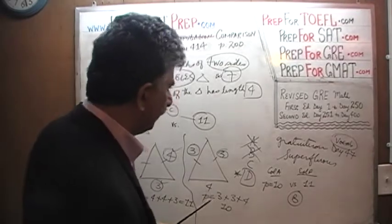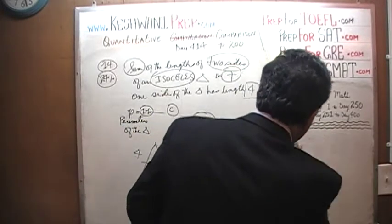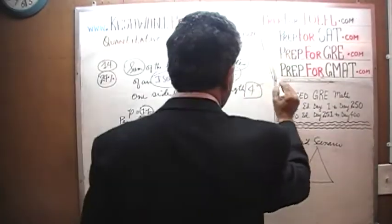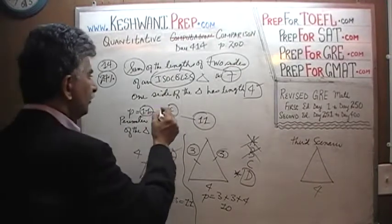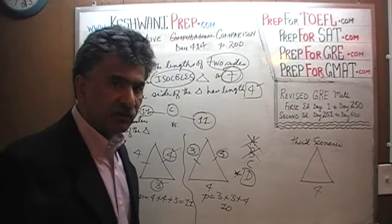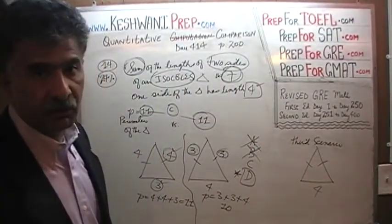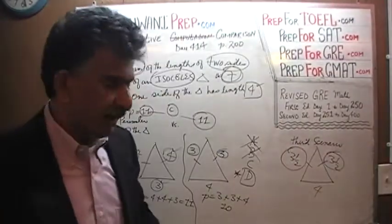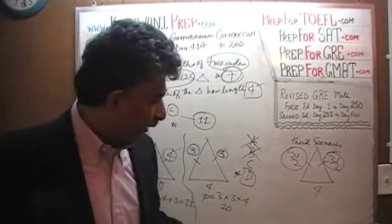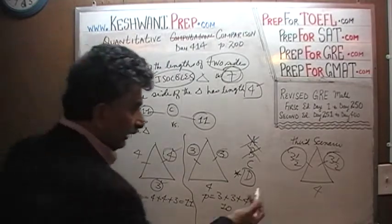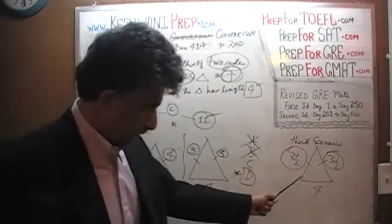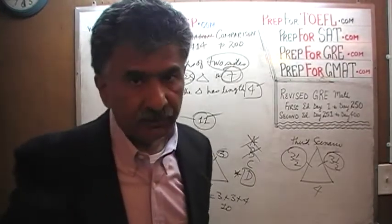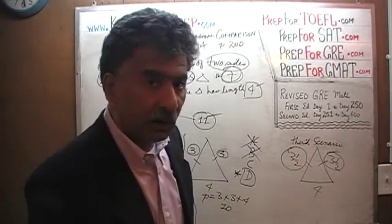Here's the third scenario. We need a triangle where one side is 4 and the sum of two sides is 7. How can we do that and still have an isosceles triangle? Take 7 and cut it in half — three and a half, and three and a half. Three and a half plus three and a half is 7, one side is 4, and it's isosceles. The perimeter is still 7 plus 4 equals 11 — same as the first scenario. It doesn't change anything, but I wanted you to see that this possibility also exists. See you tomorrow!